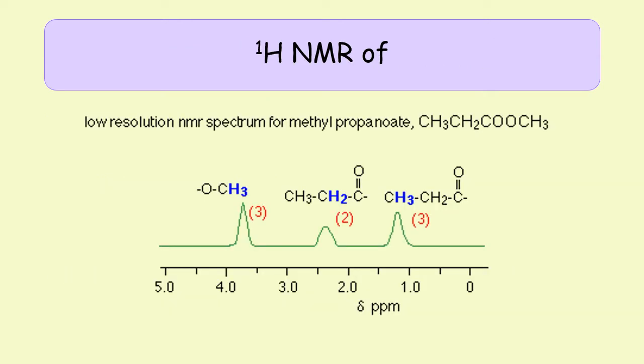Here we have an example of methyl propanoate and we see three curves — three individual chemical shifts which we could identify using the chart on page 17. The bracketed red numbers are the integrated values, telling us that one peak is a CH3, one is a CH2, and the other is also a CH3. The integrated value, often shown in brackets, tells you the number of protons in each environment.